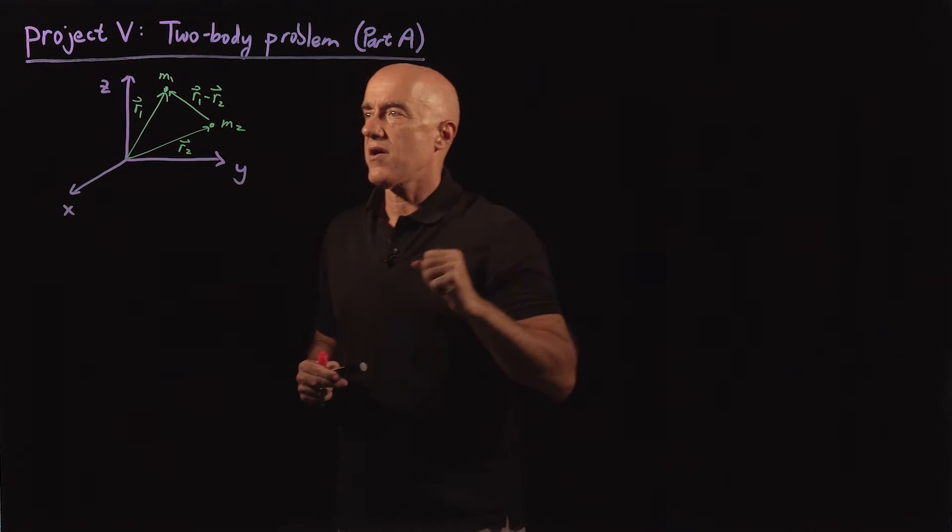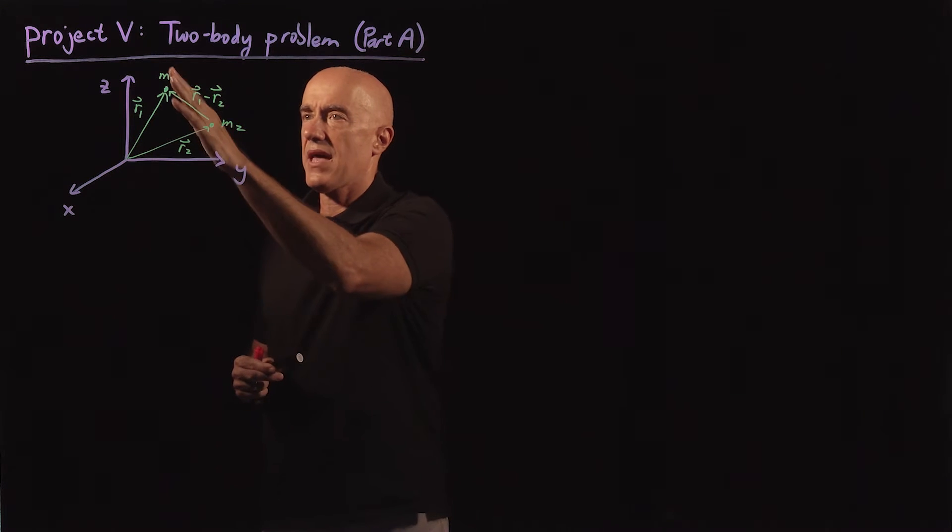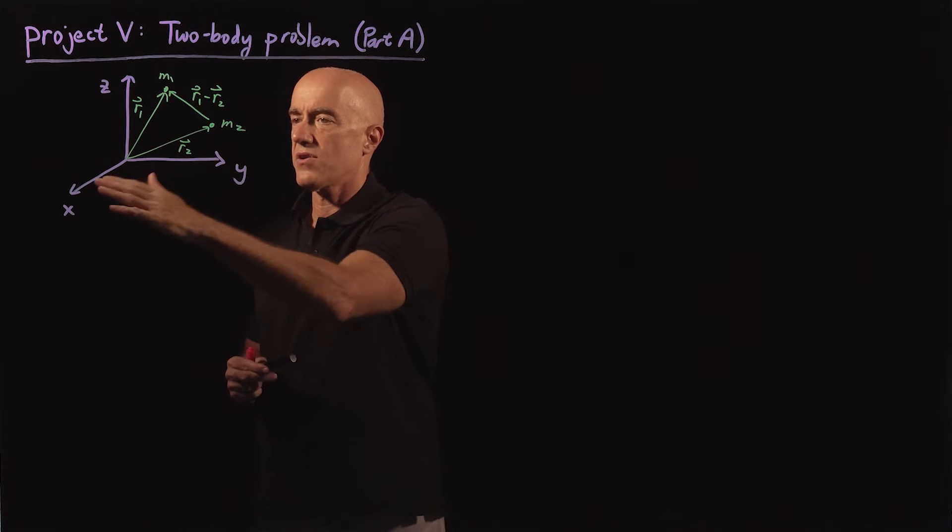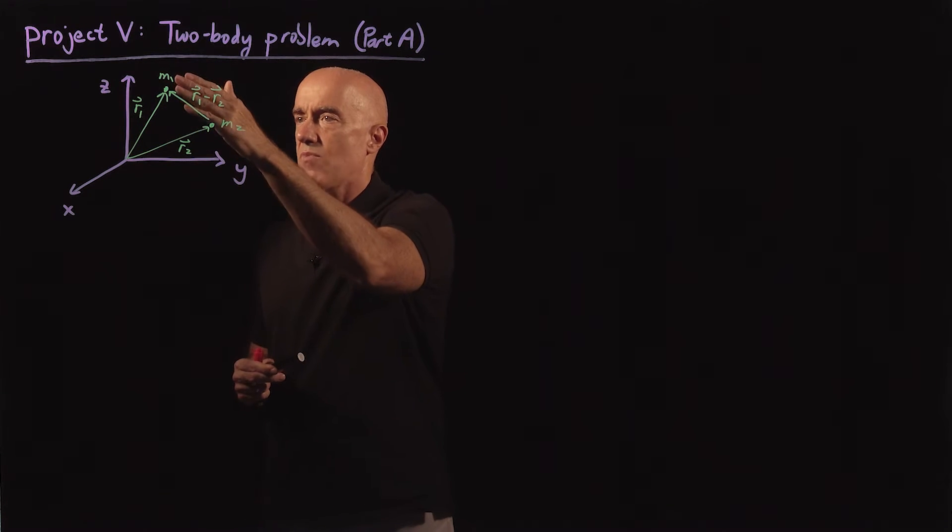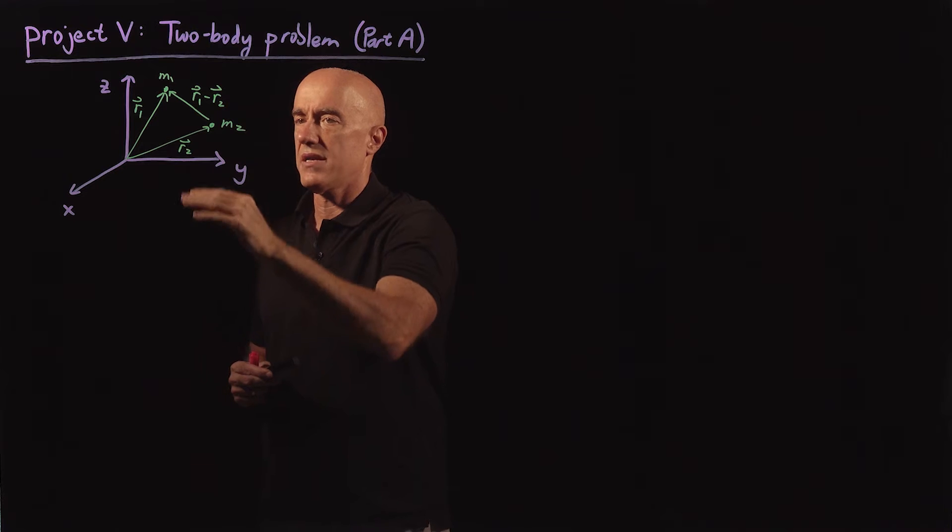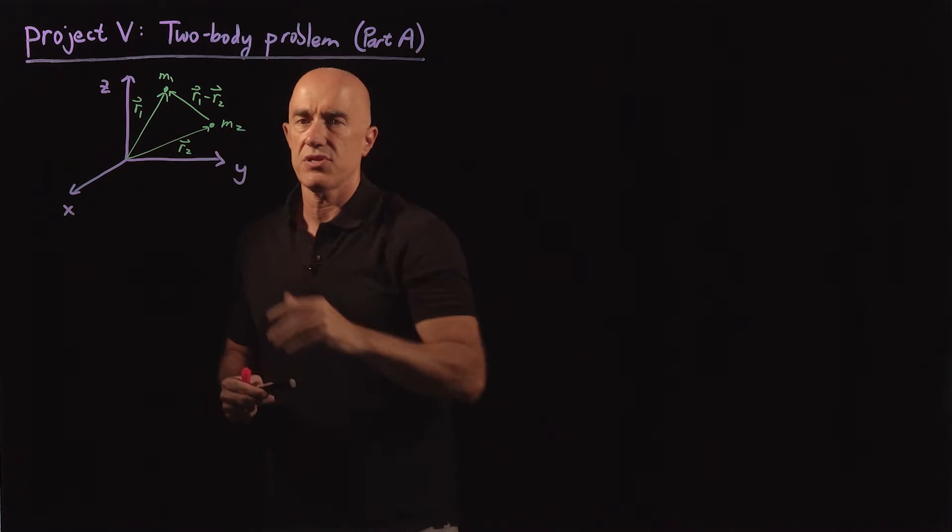So here we have two masses, m1 and m2. We've defined a coordinate system, so m1 is at position r1 and m2 is at position r2.